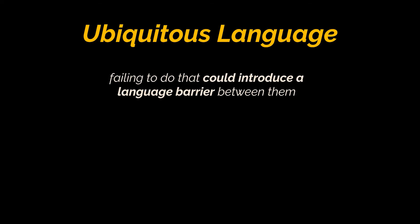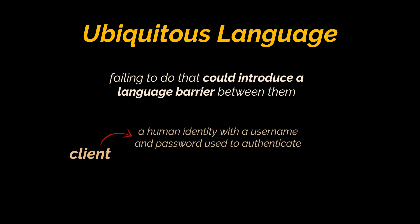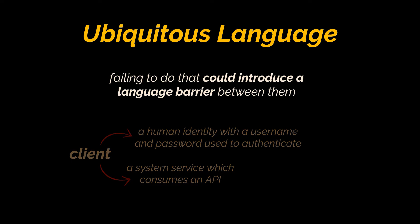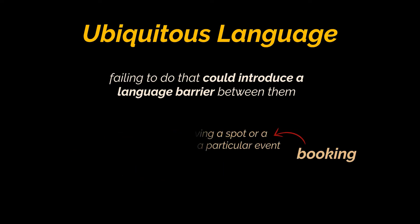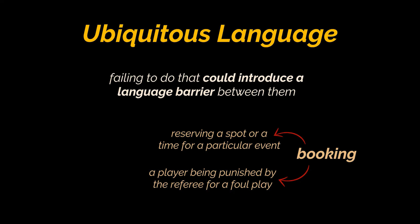If the development team and the business team don't work together in enriching this language, the chance increases that they develop separate languages, introducing a language barrier and leading to inaccuracies. For example, the word 'client' can have very different meanings in different contexts — a client could be a human identity with a username and password used to authenticate within a web page, or it could be a system service which consumes an API. Similarly, the term 'booking' could mean reserving a spot for a particular event, but it could also refer to a player being punished by the referee for foul play.